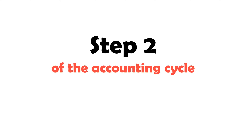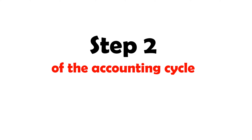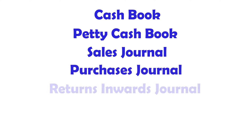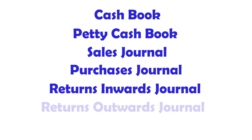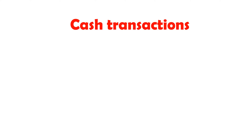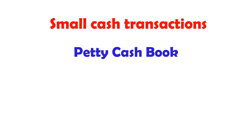Step 2 of the accounting cycle: journals. The main journals include the cash book, petty cash book, sales journal, purchases journal, returns inwards journal, returns outwards journal, and general journal. Cash transactions use the cash book. Small cash transactions use the petty cash book.